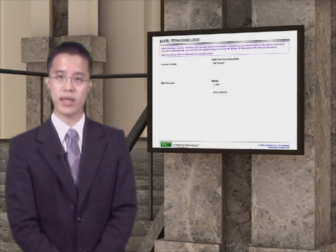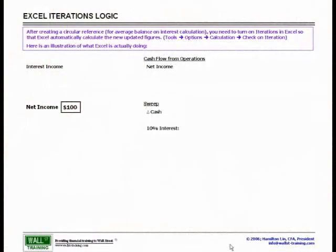Let's now assume that we currently have $100 of net income. This $100 of net income, which is currently in black, is the first beginning point of our first iteration.